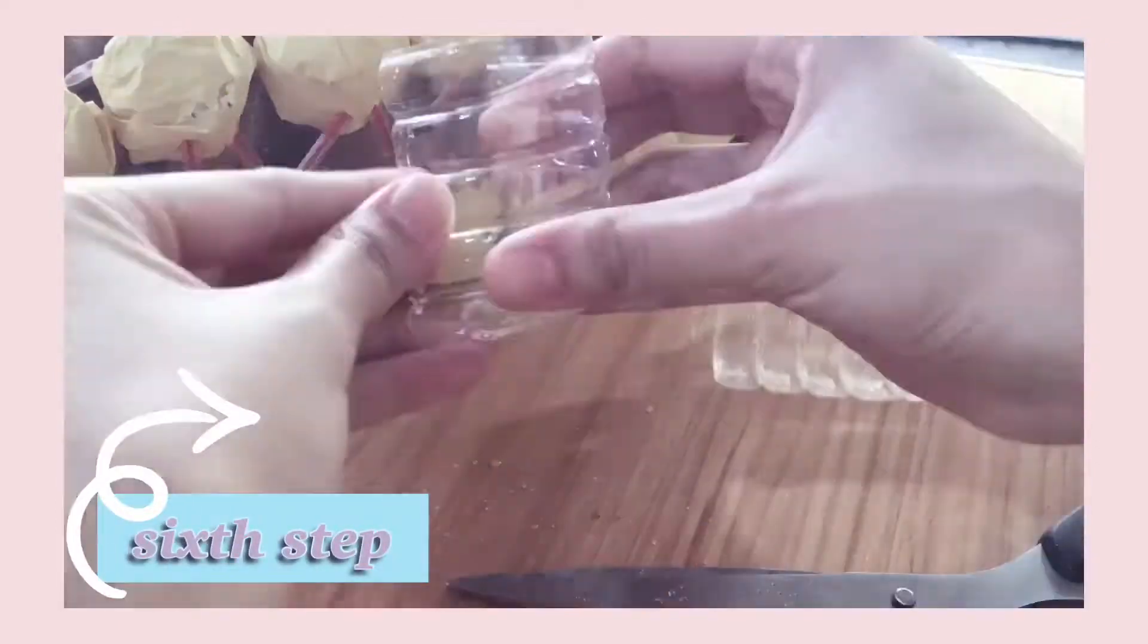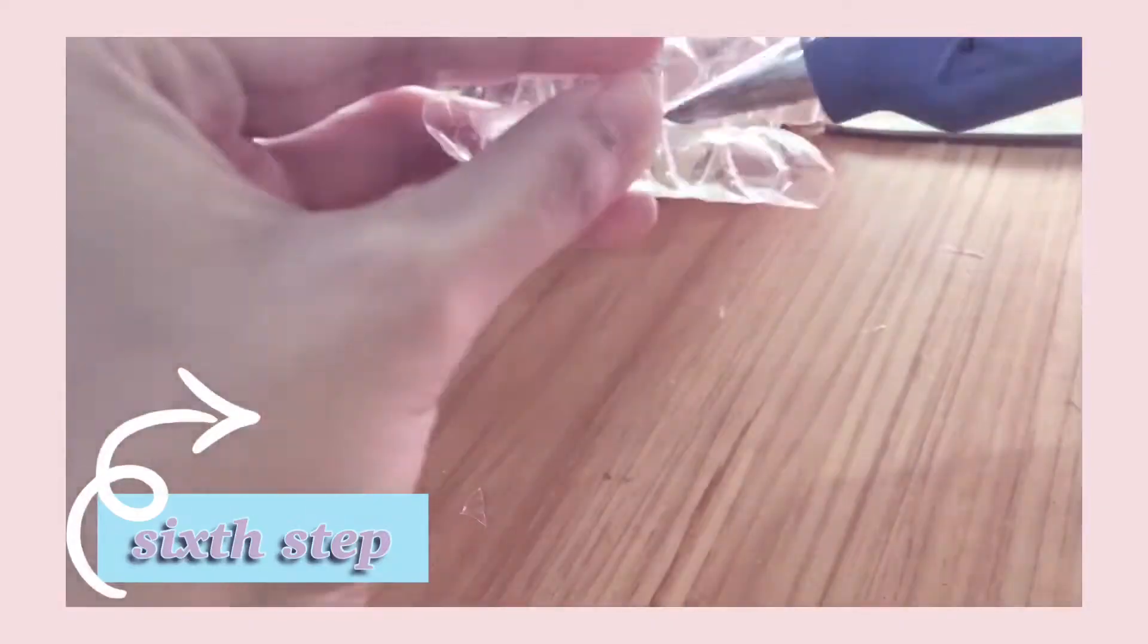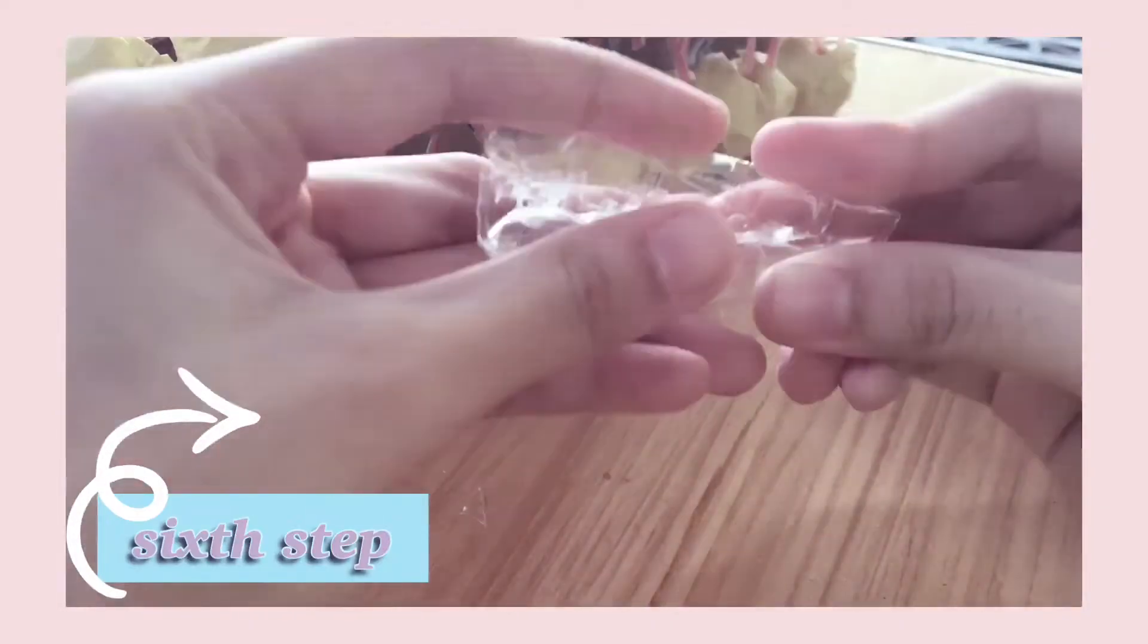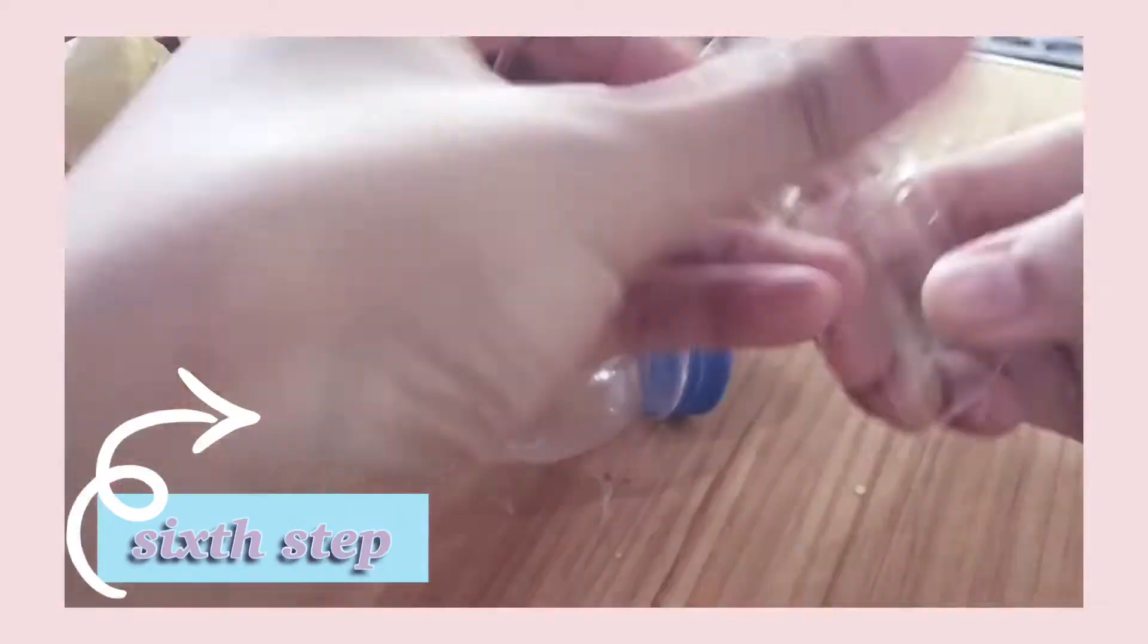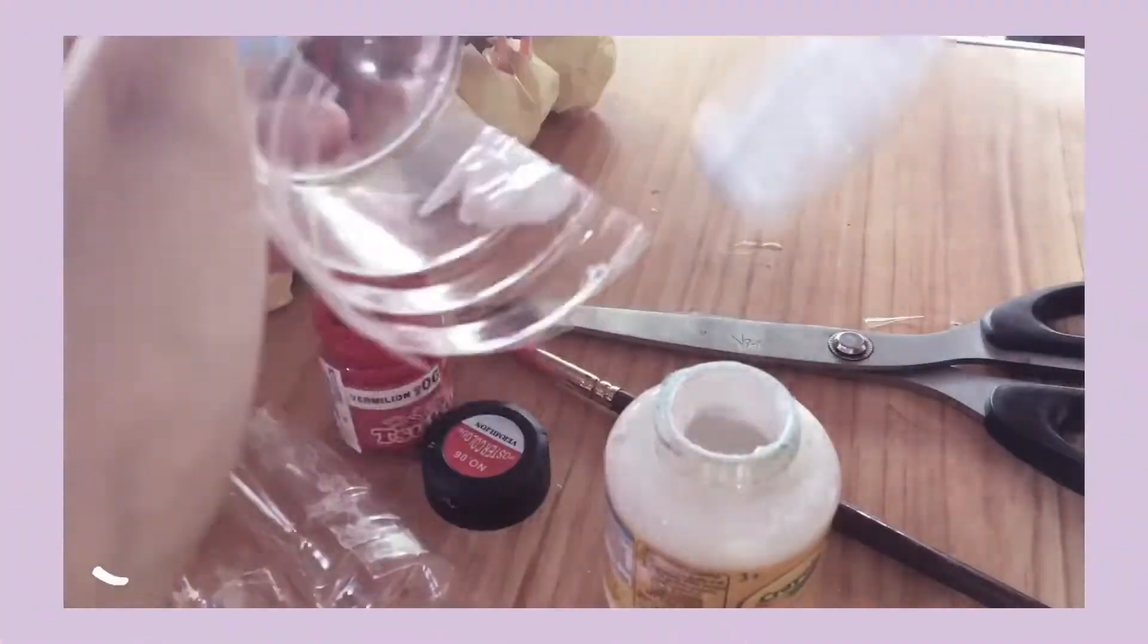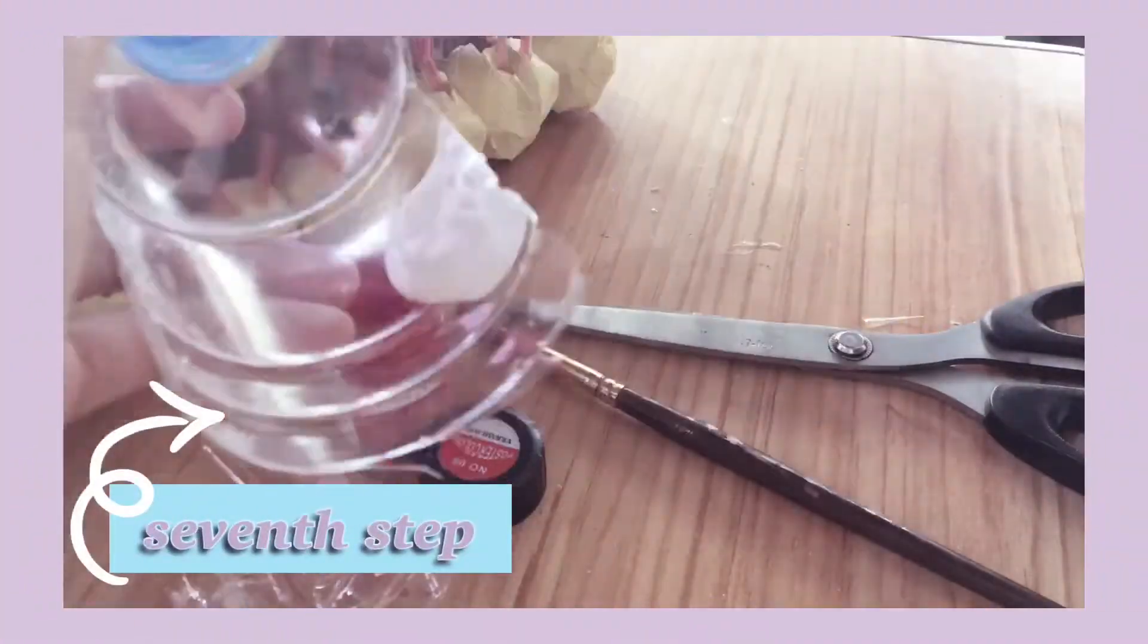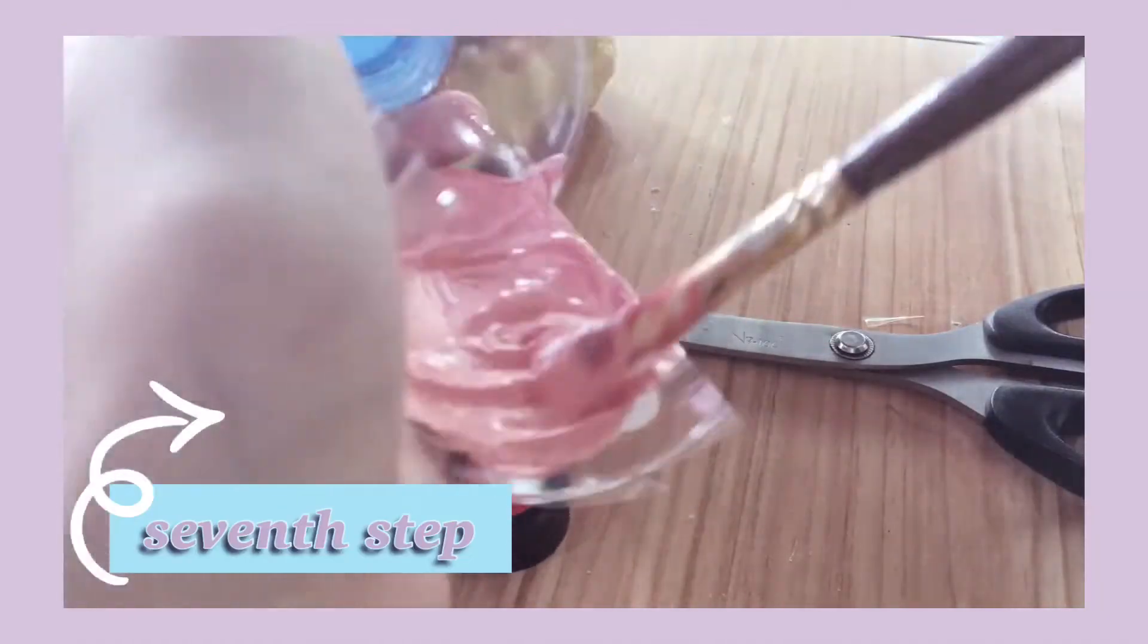The sixth step is to cut the plastic bottles into two-way circles and a one-way circle and just glue it up, and then just paint it according to the color that you want.